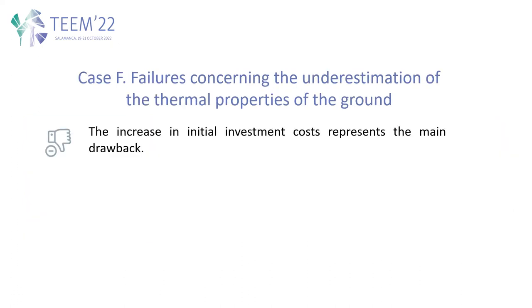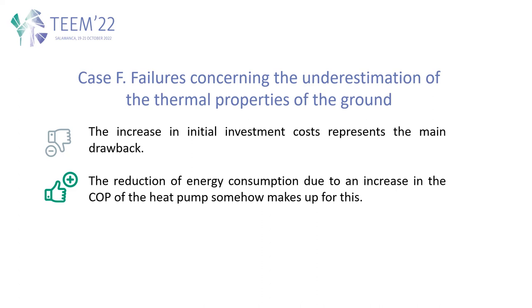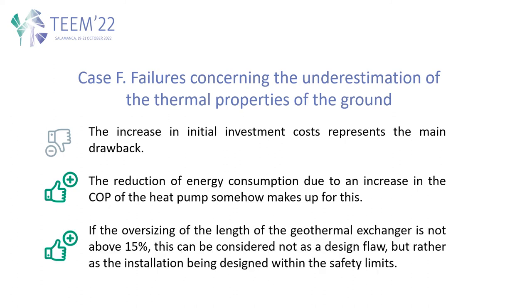And case F — that is, failures concerning the underestimation of the thermal properties of the ground — has one main drawback: it increases the initial investment. However, this also may cause the reduction of the energy consumption, due to an increase in the COP of the heat pump. And if we do not deviate more than 15%, under some circumstances, this may be considered a success.